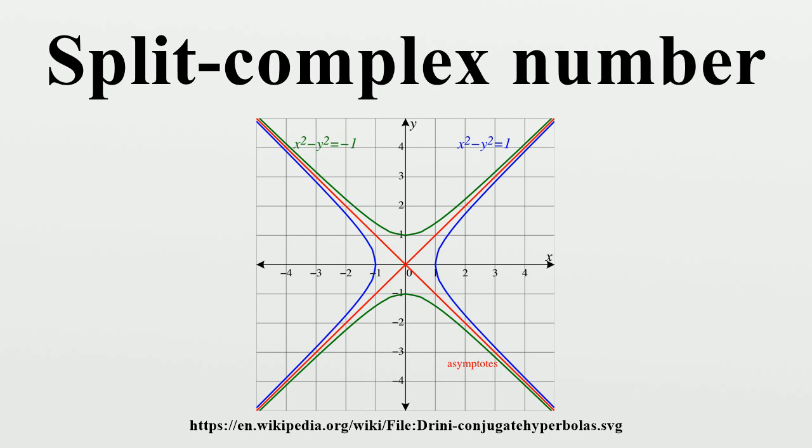the split complex numbers actually form a commutative and associative algebra over the reals of dimension 2. The algebra is not a division algebra or field since the null elements are not invertible. In fact, all of the non-zero null elements are zero divisors.